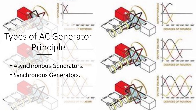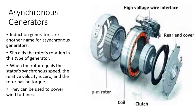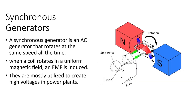Types of AC generator according to principle: one is asynchronous generators, and two is synchronous generators. Induction generators are another name for asynchronous generators. Slip aids the rotor's rotation in this type of generator. When the rotor equals the stator's synchronous speed, the relative velocity is zero and the rotor has no torque. Asynchronous generators can be used to power wind turbines.